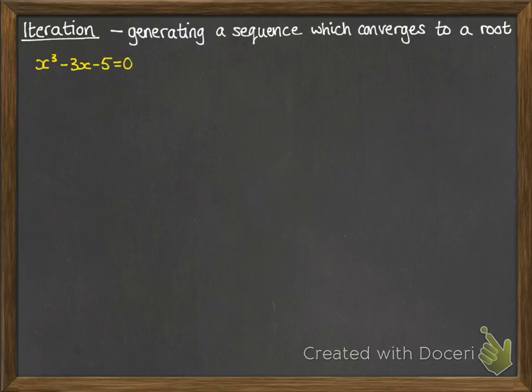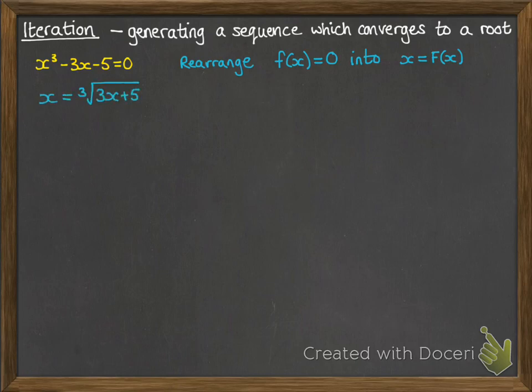So let's start with this equation, and I'll show you how to do it. We've got x cubed minus 3x minus 5 equals 0, and we're looking for a root. The first thing that we need to do is rearrange this into the form x equals some other function of x. So here we've got f of x equals 0 in the yellow, where f of x is that cubic function. We're going to rearrange it to be x equals some other function of x. We can rearrange that whole thing as follows: we take the 3x and the 5 over to the other side, and then we'll cube root it.